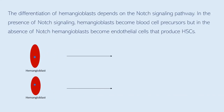The differentiation of hemangioblasts depends on the Notch signaling pathway. In the presence of Notch signaling, hemangioblasts become blood cell precursors, but in the absence of Notch signaling, hemangioblasts become endothelial cells that produce HSCs.